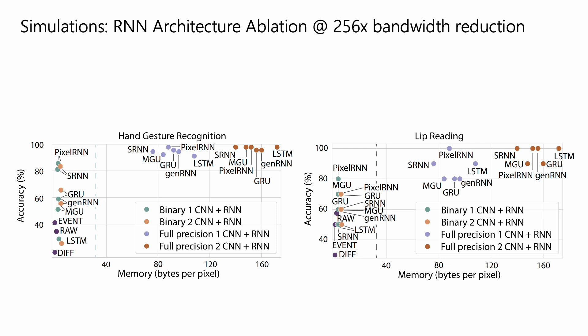We tested both binary and full precision models and we plotted the performance accuracy. On the x-axis, we have the memory usage calculated as bytes per pixel, which is the limiting factor for in-pixel processors.